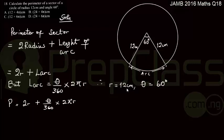From the question, we know that the radius is 12 cm, and the angle subtended at the center of the circle is 60 degrees. So therefore,